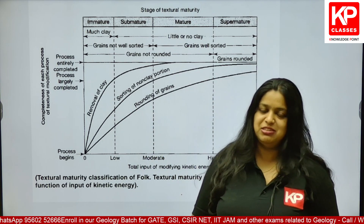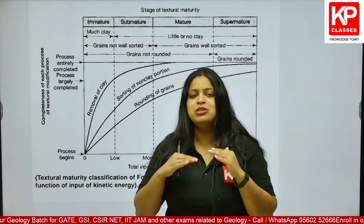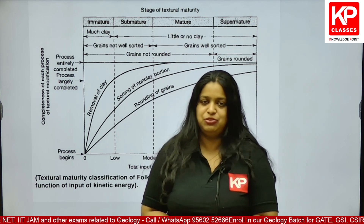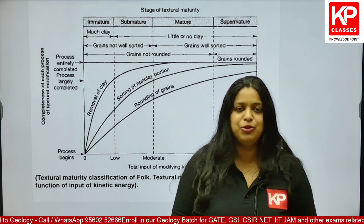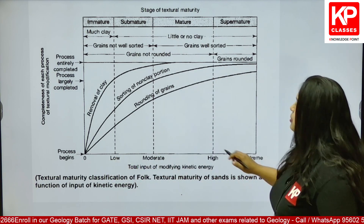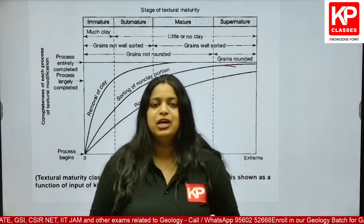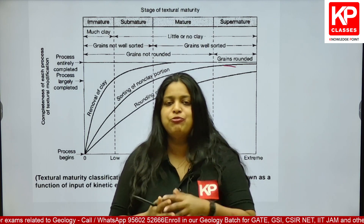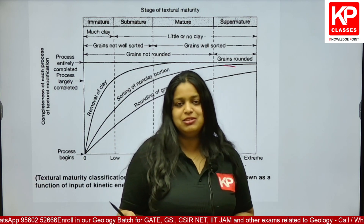Roundness of a grain depends upon the angularity of the grains. More the transportation, more rounded or more abraded the angular sides will be. So more transportation will cause more abrasion, more erosion, and hence smoothening of the angular sides of the grain. For sorting, a well-sorted sample means the same grain size will be present, or the gradation will be poor.